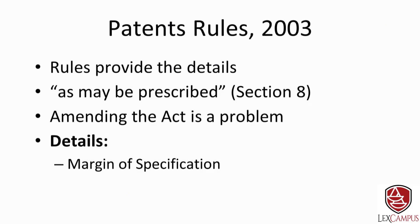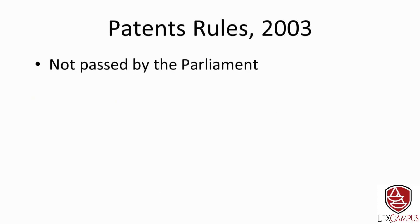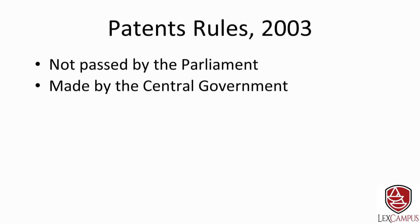The patent rules also describe details not normally found in the act. For instance, if you want to know the required margin space in a specification, you will not find it in the act, but the rules do mention it. Similarly, the fee payable for filing a complete specification varies — it differs for an individual, a small entity, or a corporate entity — and all these details are found in the patent rules.